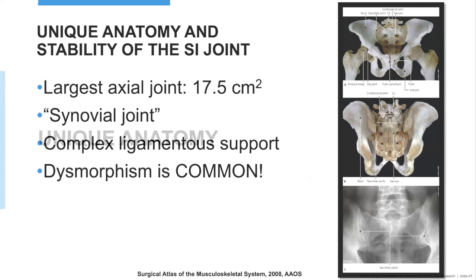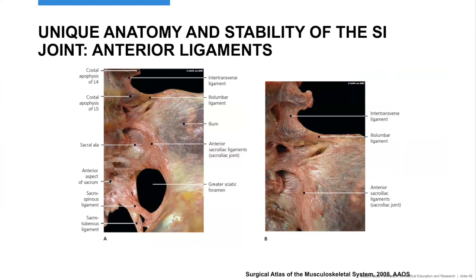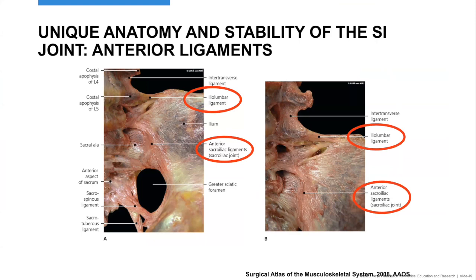Looking at the SI joint anatomy: posteriorly, it is extremely well fortified with a ligamentous complex in the back — I refer to them as the main posterior ligaments. Anteriorly, there is a complex ligament structure with the anterior SI joint ligaments. The iliolumbar ligament can be a harbinger of instability — when that pelvis shifts, you can have avulsions of the transverse process holding on to the iliolumbar ligament. The sacrospinous and sacrotuberous ligament complex are also important.